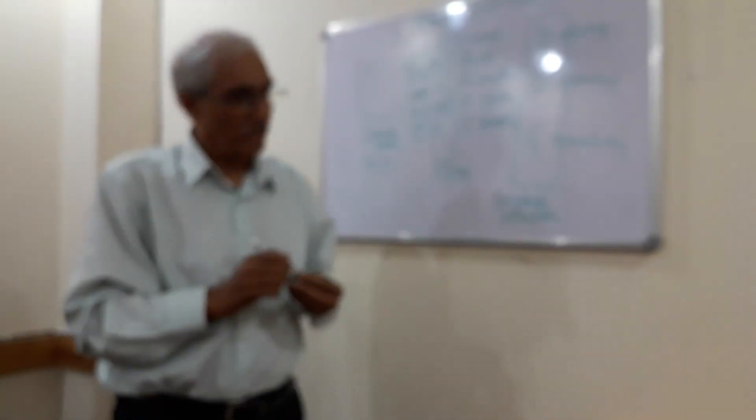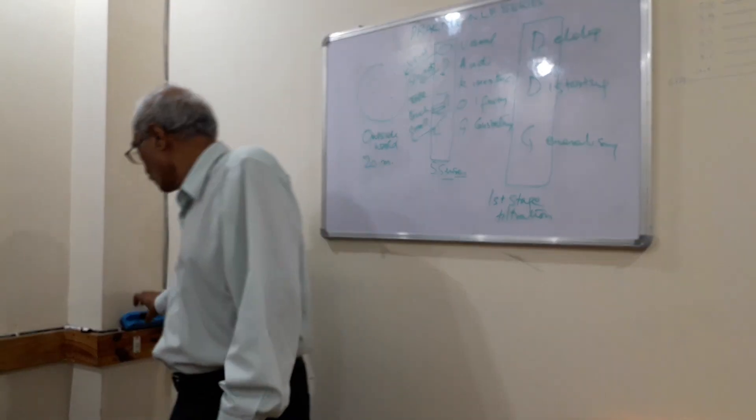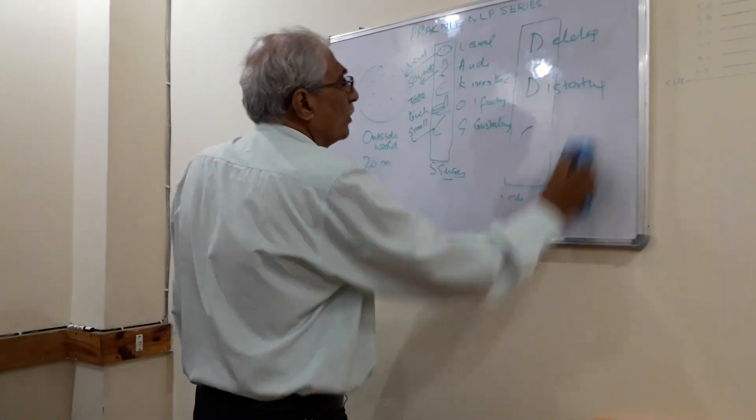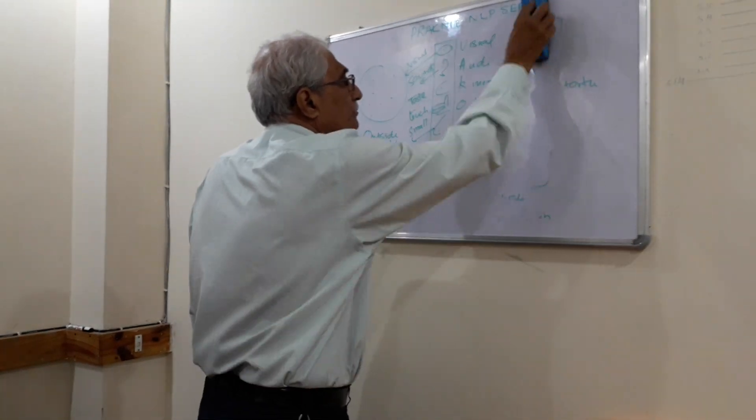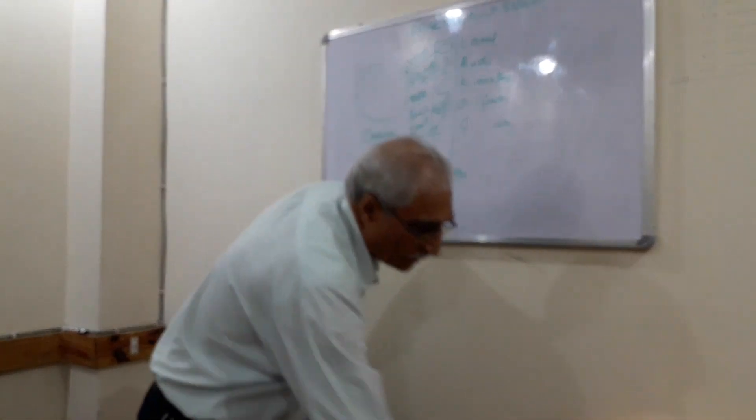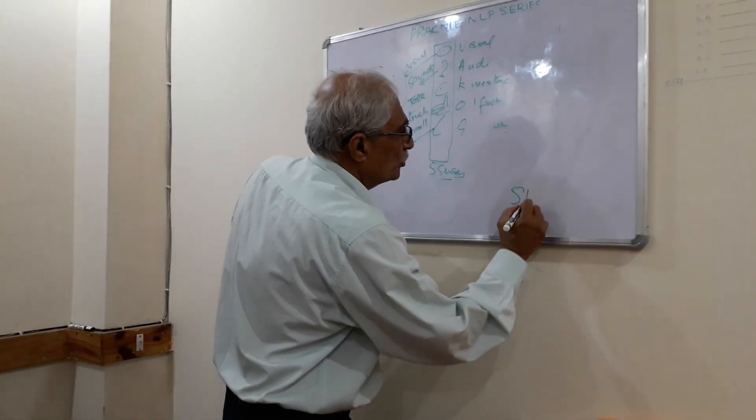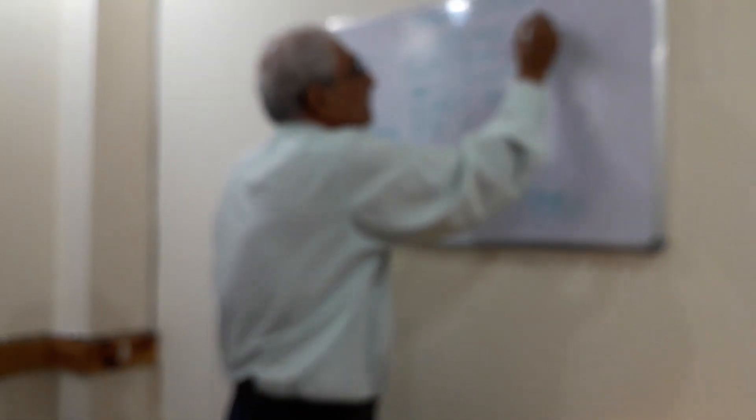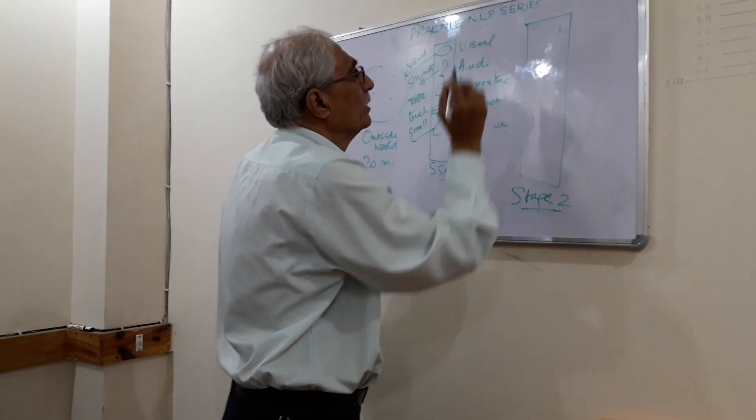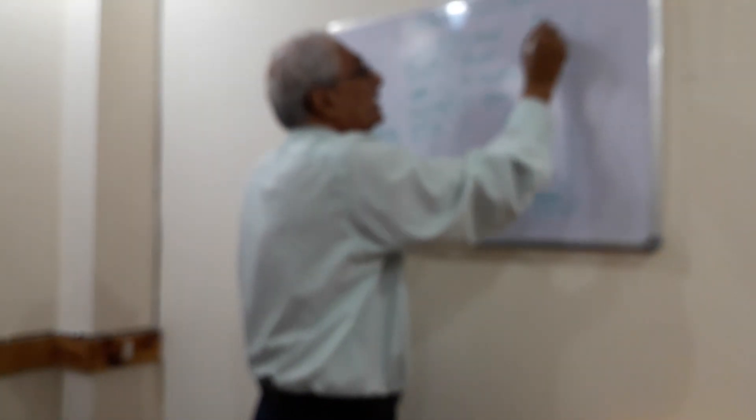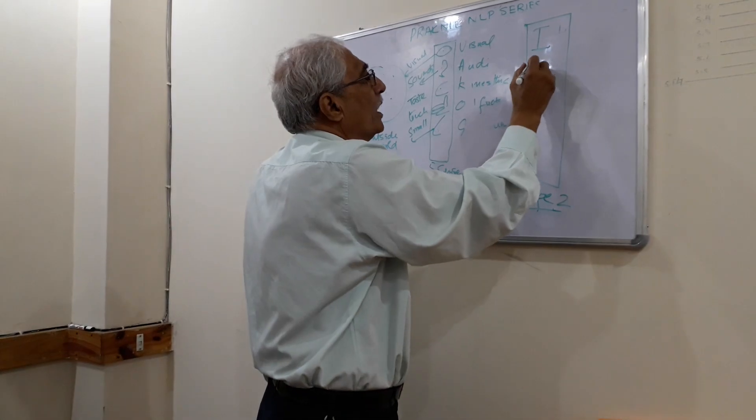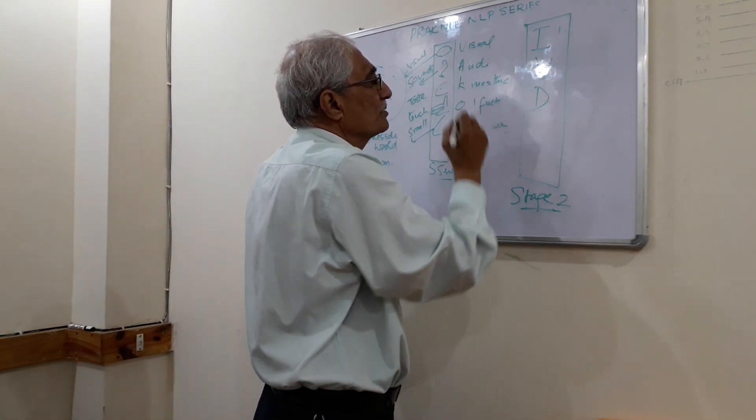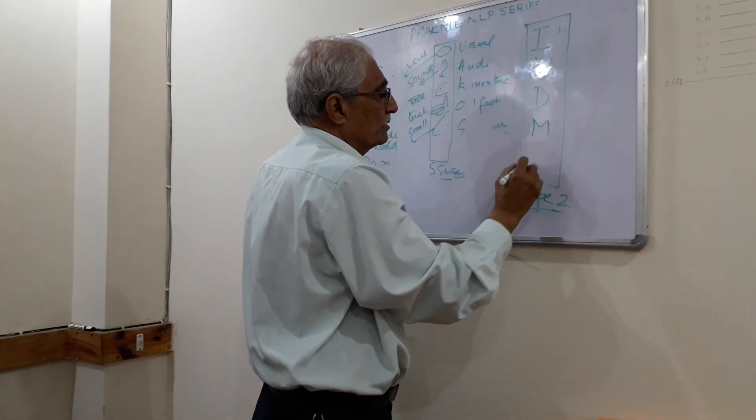Now, let me explain what happens in stage two. In stage two, we will be utilizing our own internal world—our identity, our values, our decisions, our memories, and our language.